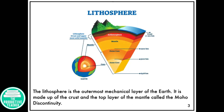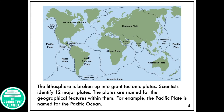The lithosphere is the outermost mechanical layer of the Earth. It is made up of the crust and the top layer of the mantle called the Moho discontinuity. The lithosphere is broken up into giant tectonic plates, and scientists identify 12 major plates. The plates are named for the geographical features within them.